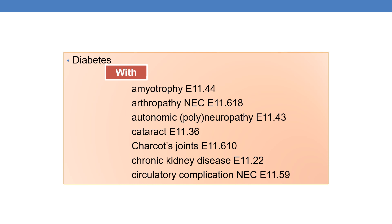In the alphabetical index under diabetes, you can find 'with', which indicates those two conditions are associated. For example, amyotrophy is due to diabetes mellitus — the combination code is E11.44. Similarly, cataract due to diabetes mellitus has code E11.39. And CKD — chronic kidney disease due to diabetes mellitus — has code E11.22.